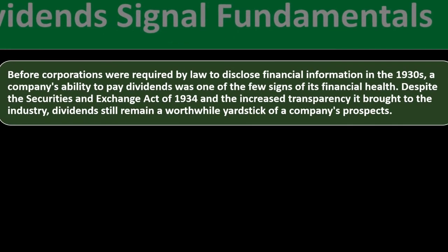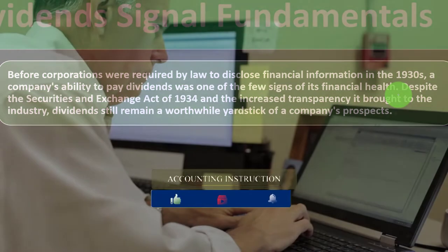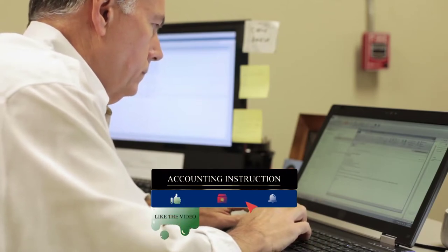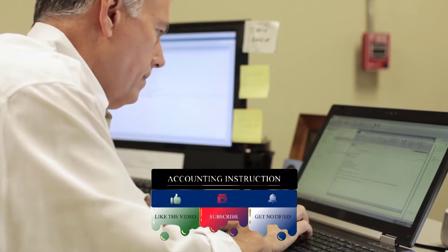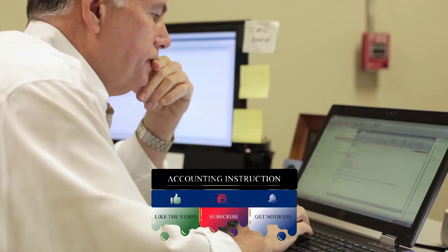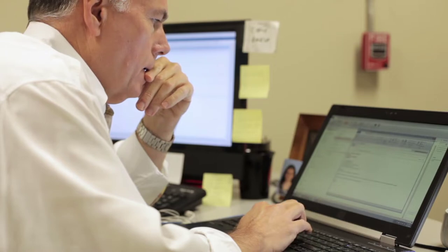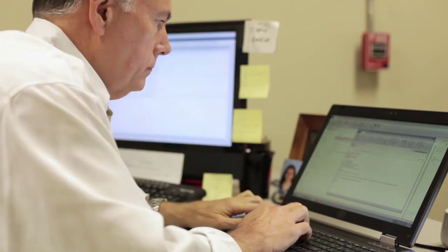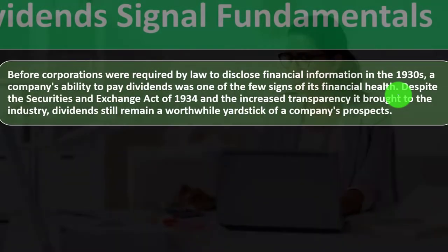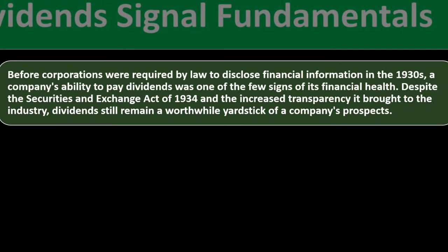Before corporations were required by law to disclose financial information in the 1930s, a company's ability to pay dividends was one of the few signs of financial health. These developments — separate legal entities, exchanges, and the ability to trade stocks — were revolutionary. Despite the Securities and Exchange Act of 1934 and the increased transparency it brought to the industry, dividends still remain a worthwhile yardstick of a company's prospects.